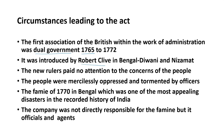Under this system of dual government, the British were engaged in the collection of land revenue or Diwani from Bengal, Bihar and Orissa. The British got this right through the Treaty of Allahabad, through which the British obtained the Diwani rights of Bengal, Bihar and Orissa from Mughal Emperor Shah Alam II.